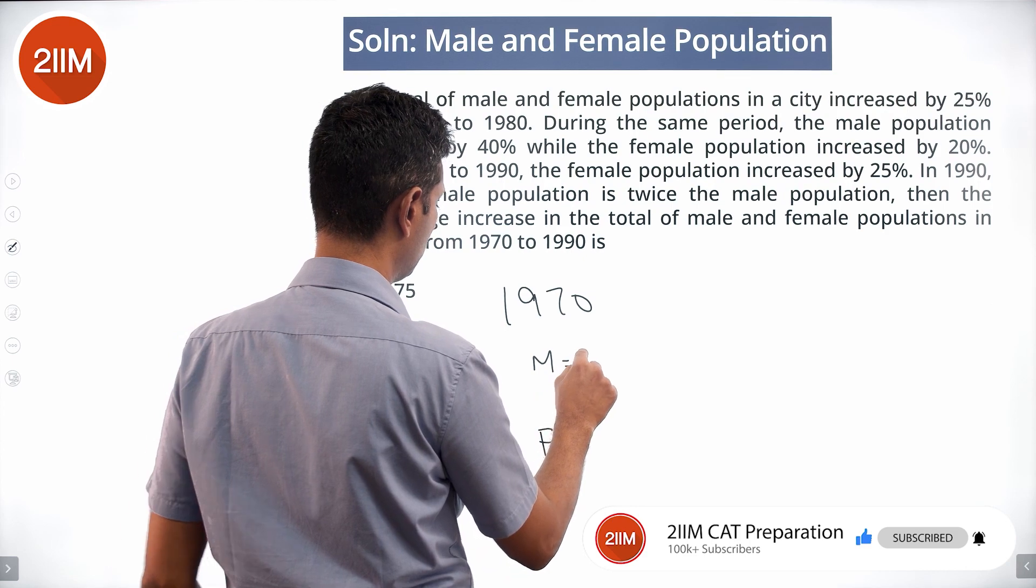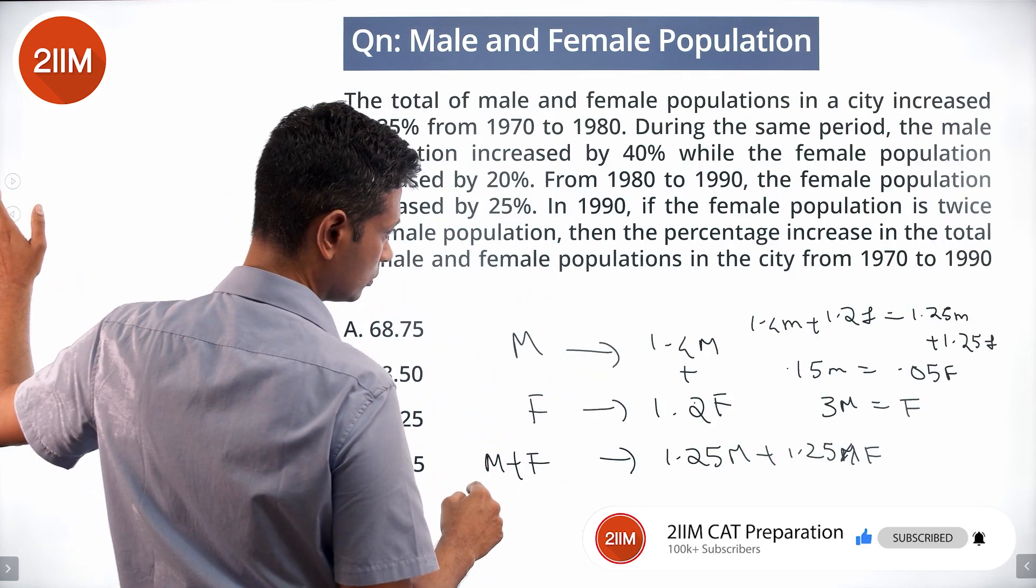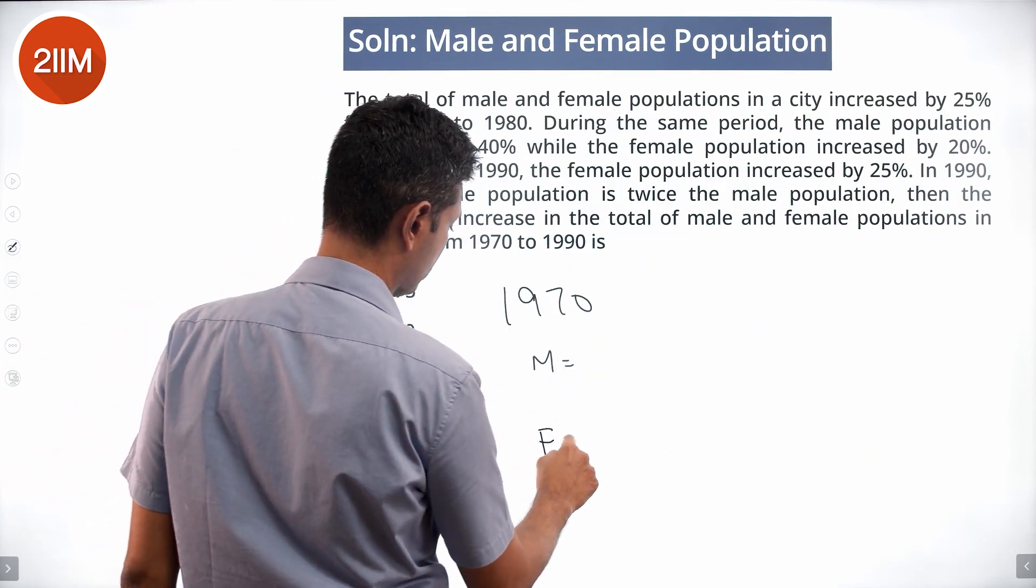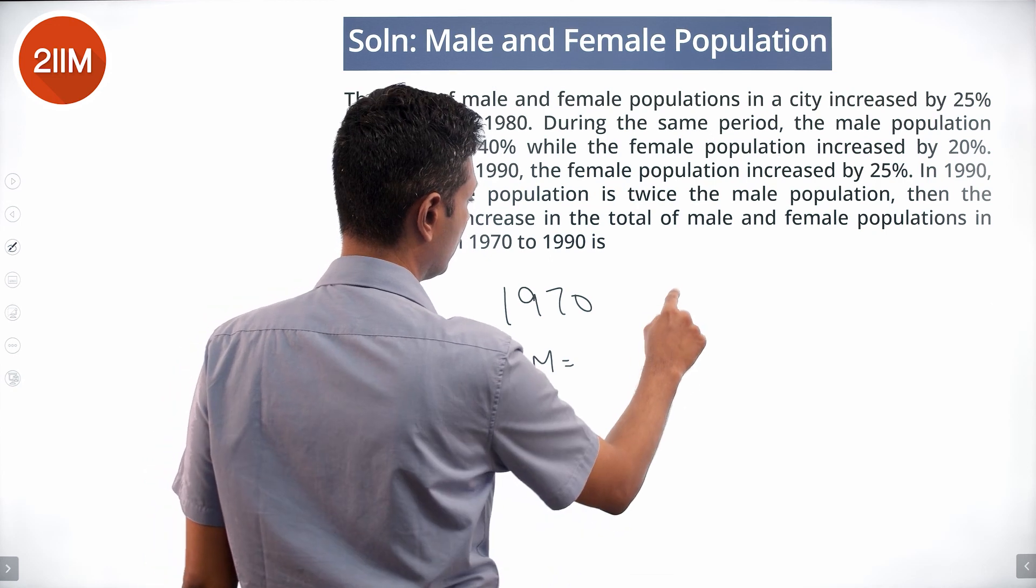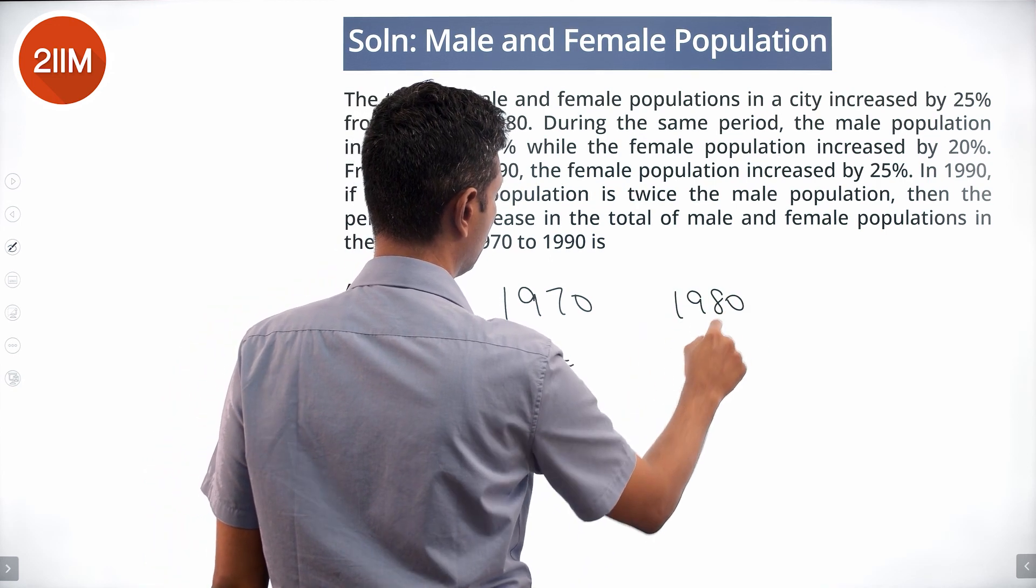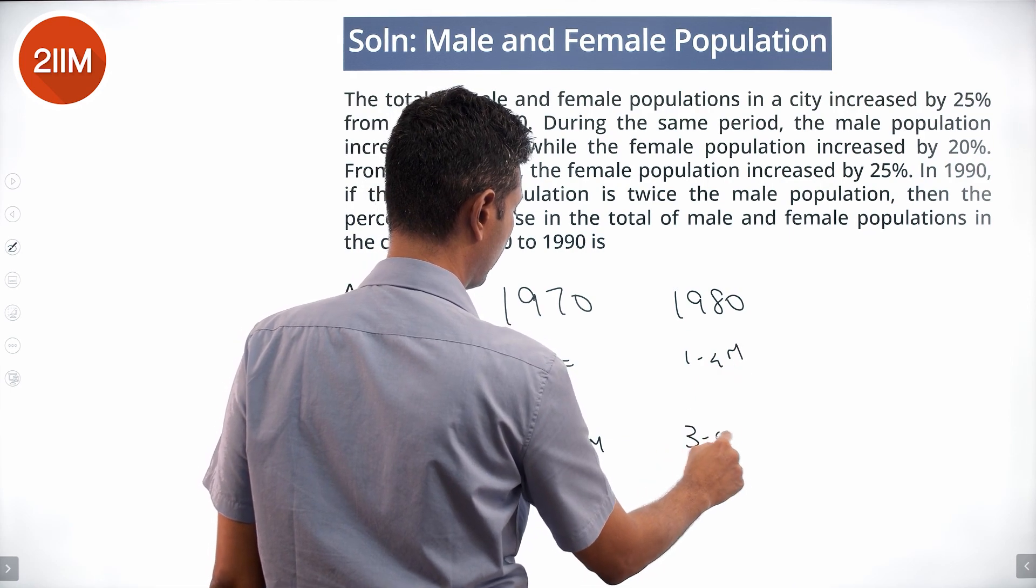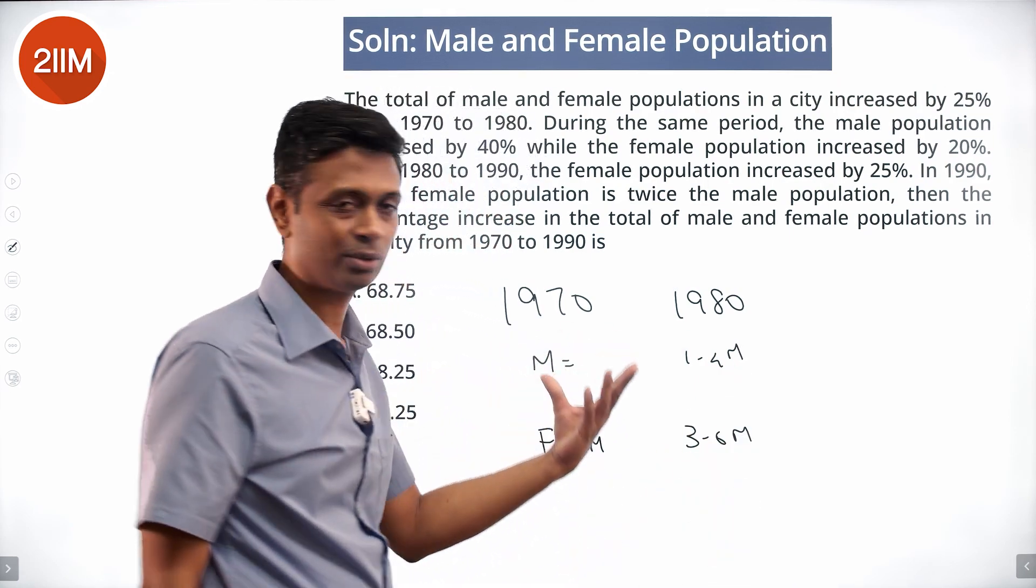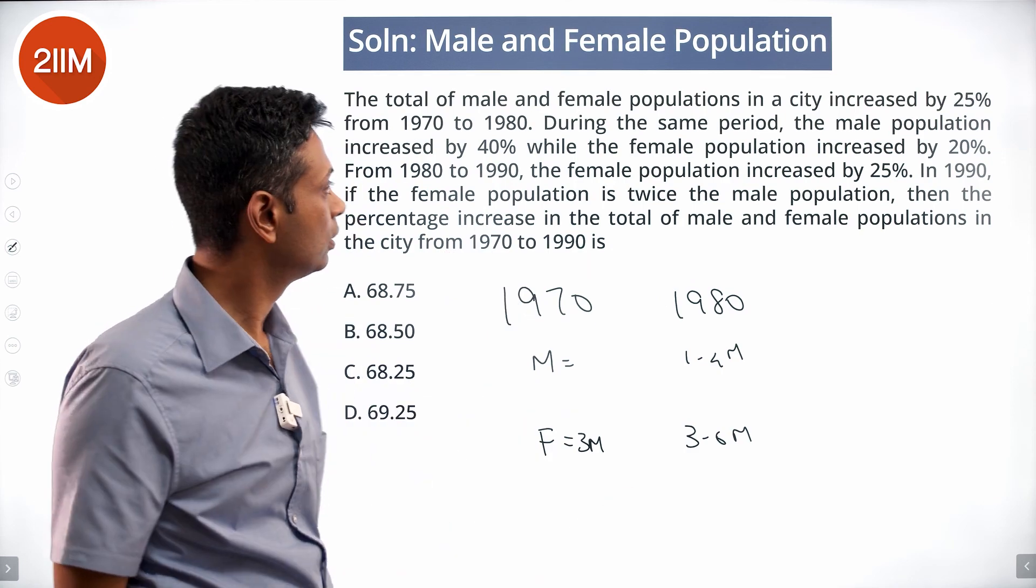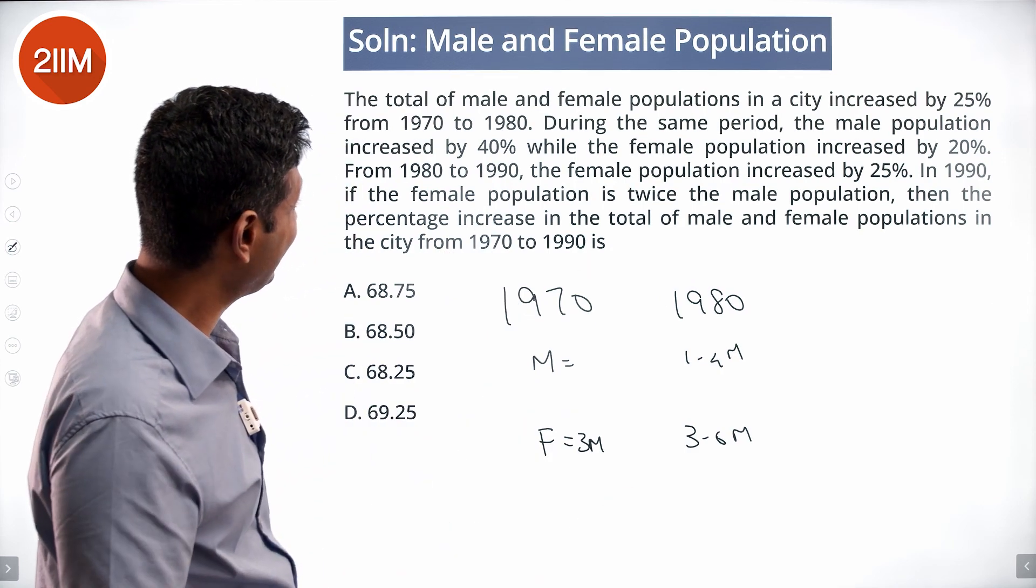M equals M, F equals 3M. In 1980, this becomes 1.4M and this becomes 3.6M (40% and 20% increases from 1970). From 1980 to 1990...